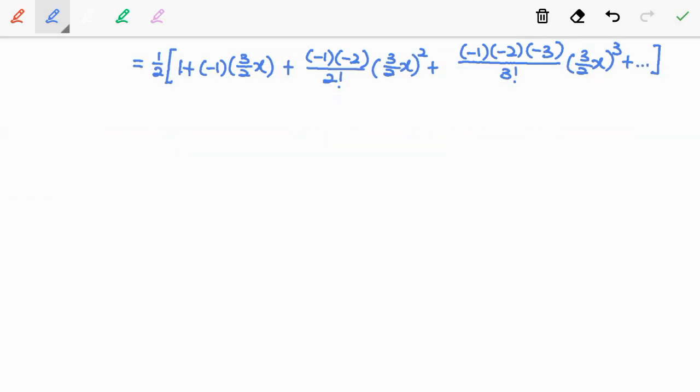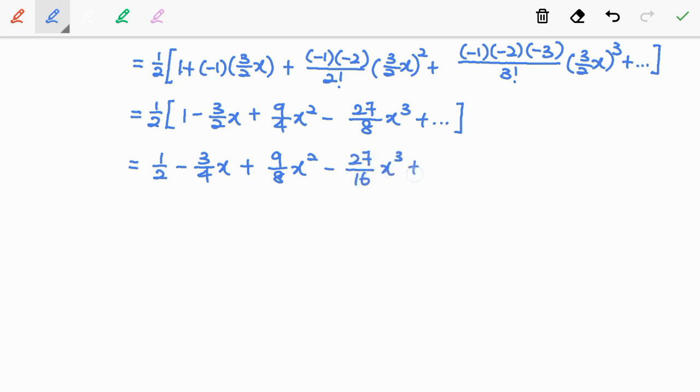After making a substitution, simplify this expression. And then multiply 1 over 2 into the expansions. So we have 1 over 2 minus 3 over 4x plus 9 over 8x squared minus 27 over 16x cubed plus dot dot dot.